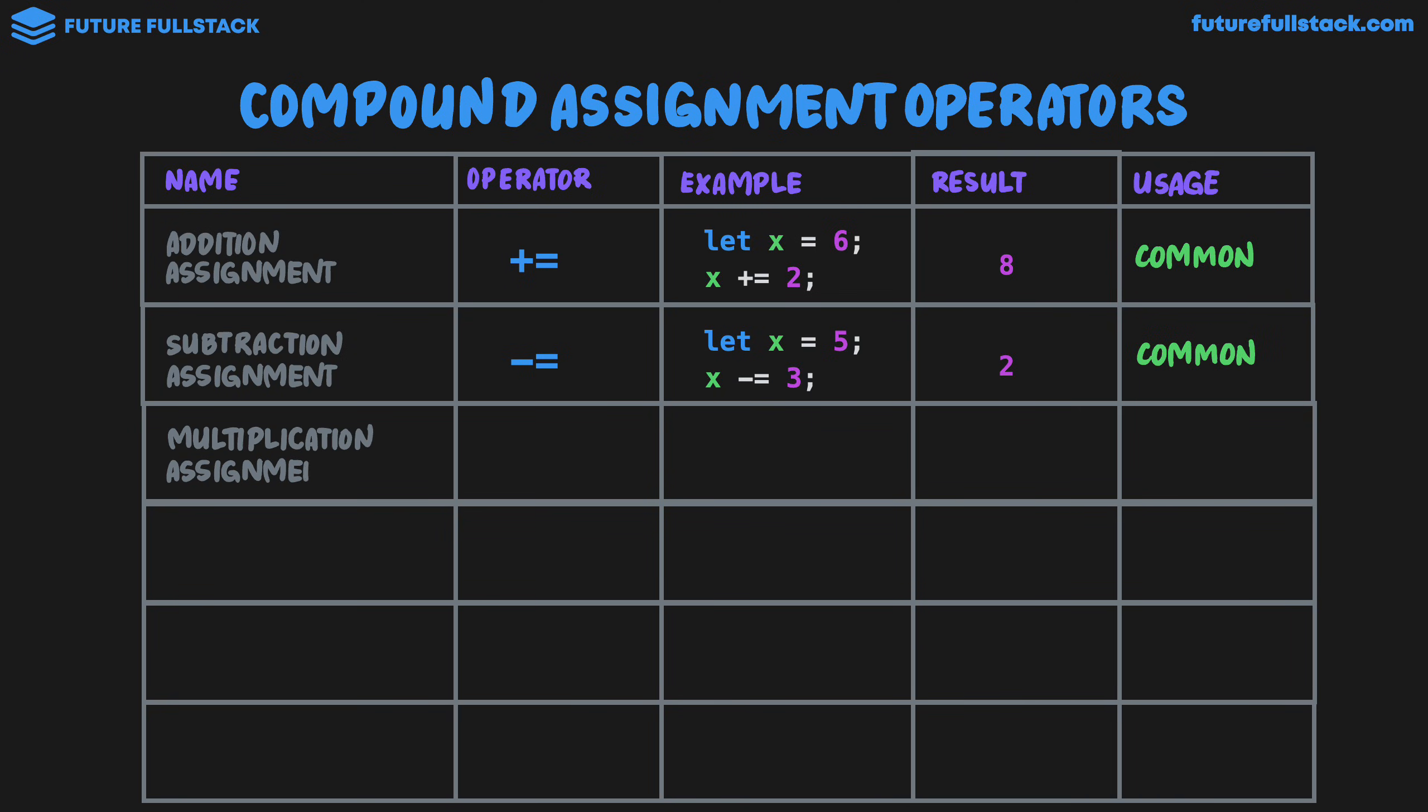For multiplication assignment, we have the multiplication symbol asterisk and then equals. Looking at example, let x equal 8. x multiply equals 3 would give us a value of 24. That is 8 times 3. Now this is less commonly used.